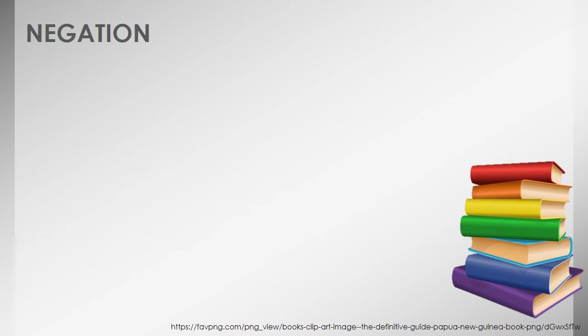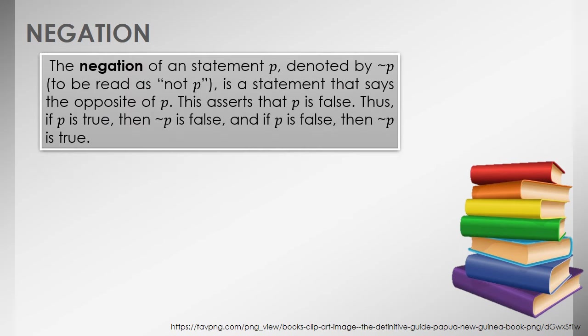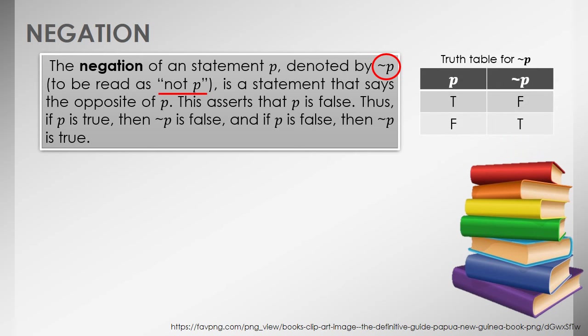The first type of statement to be discussed is negation. If we have a statement P, its negation is just the negative form of the statement, denoted as not-P. The truth table for negation shows that if statement P is true, then its negation is false; and if P is false, then its negation is true. To understand it clearly, we have the following illustrations.